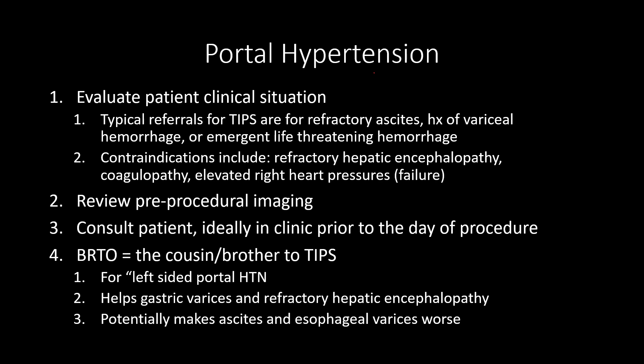The reasons we get referrals for TIPS are for people who have refractory ascites — the GI docs have been treating them medically with dietary restrictions, and no matter what they do, they're still requiring frequent large-volume paracentesis — or for people who have had variceal bleeding to decrease the chance of recurrence. The most challenging TIPS we get asked to do would be the emergent TIPS for active hemorrhage, a critical life-threatening event.